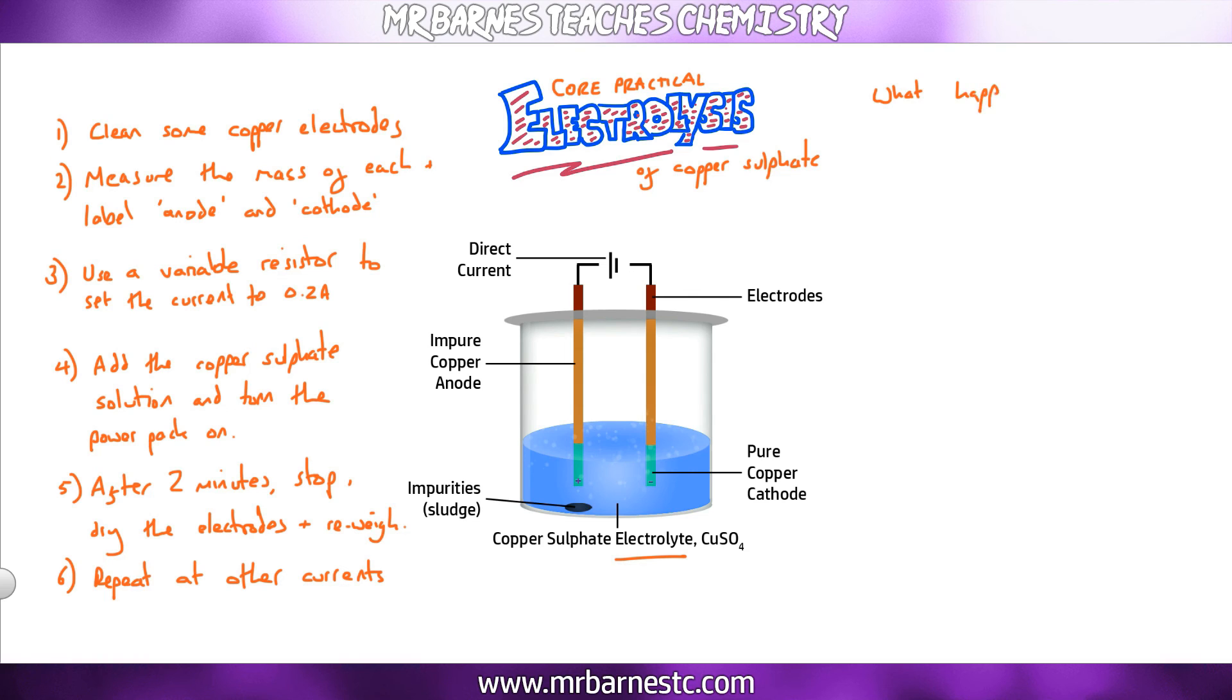The second part of this core practical is you need to be able to explain what happens. If we start off with our impure anode, we have taken our impure anode which has got copper in there, and the copper there, as soon as you turn the power on, will turn into copper 2+ ions and move into the solution. They are then positive ions and will move to your negative cathode. When they get to the cathode, they will gain electrons and turn back into copper. Remember OIL RIG, oxidation is loss, reduction is gain. They are reduced at the cathode and turn back into copper atoms.